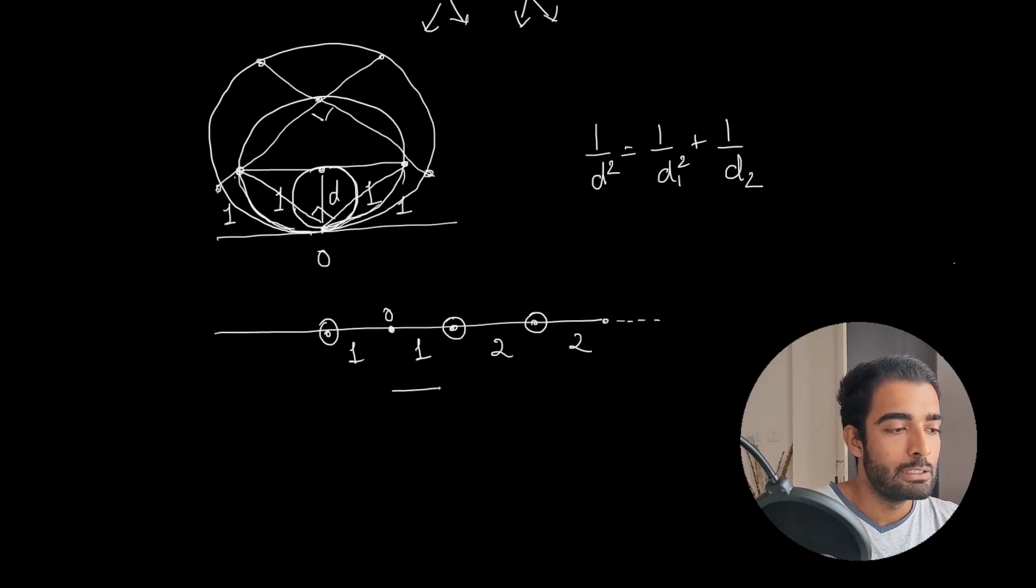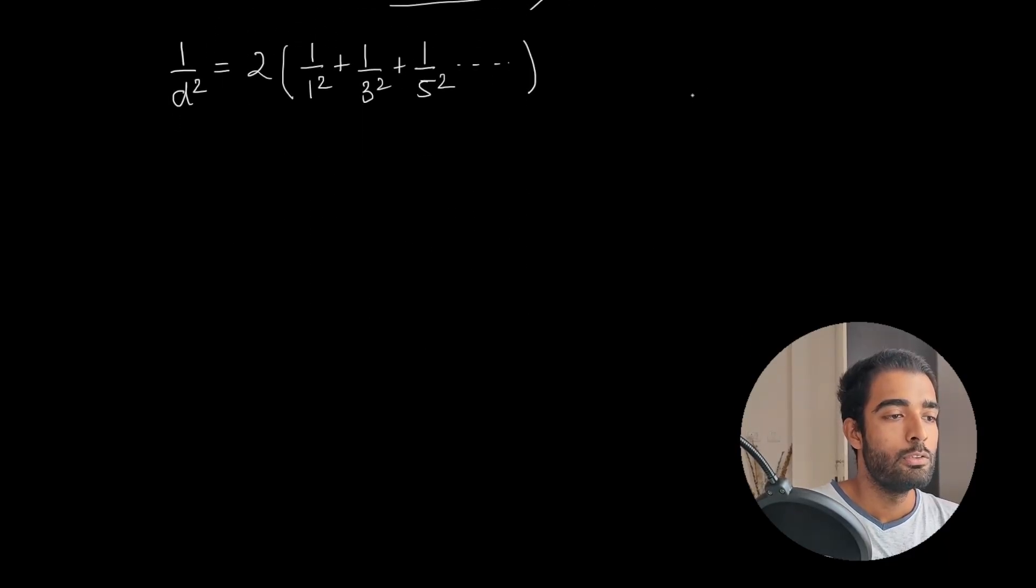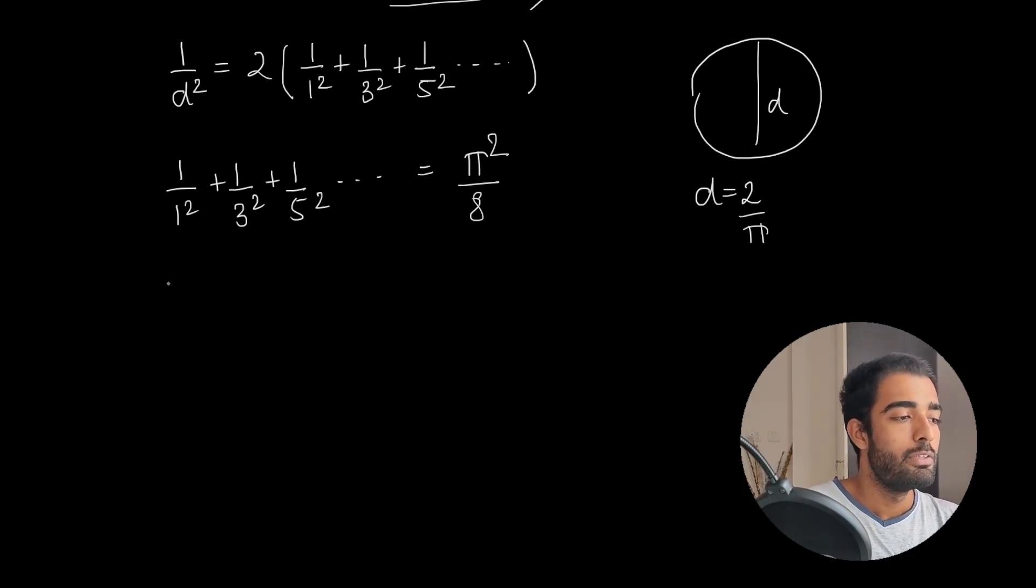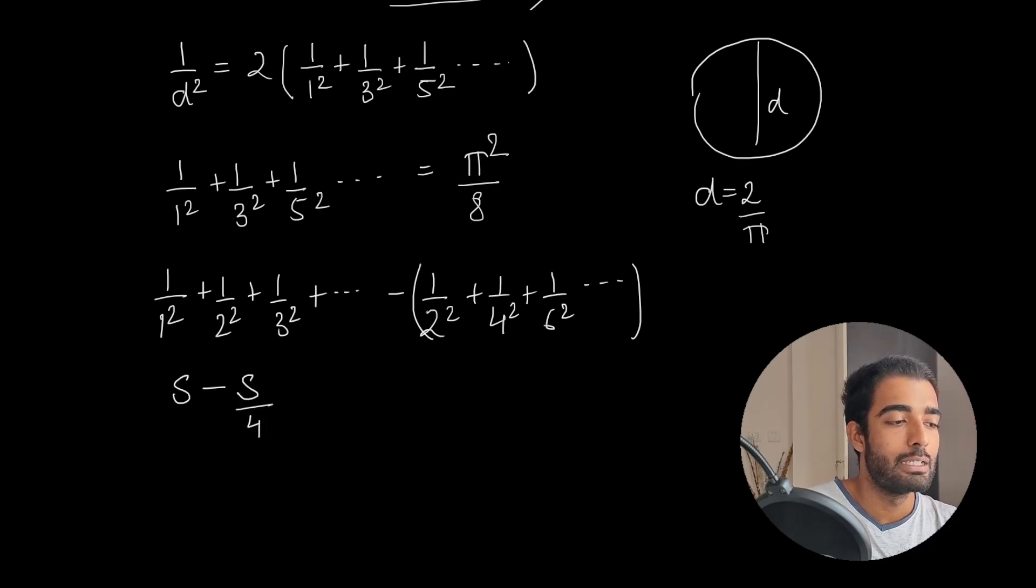Now based on the distance of origin and these points, we can write this, since we broke it multiple times. Now since the semi-perimeter of the circle was 1 and it was d, what we can write is d = 2/π. So we will get... Now we will add 1/2² and 1/4² and subtract those since those are the missing terms. So we can write S - S/4 = π²/8, which implies S = π²/6.